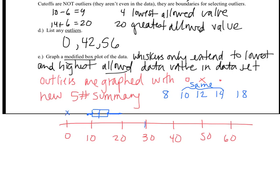Then when I graph my outliers, I've got one at 0, and I have one at 42, and I have one at 56. I'll see that those values are way out there. And if I were to have drawn my whisker to include those outliers, you can see that I would have had a much different looking graph.